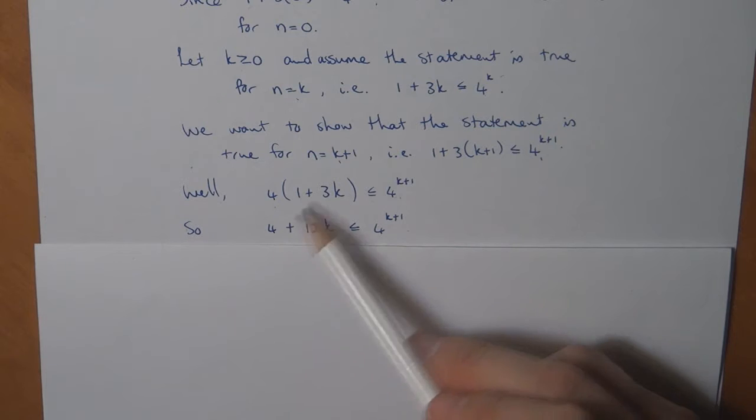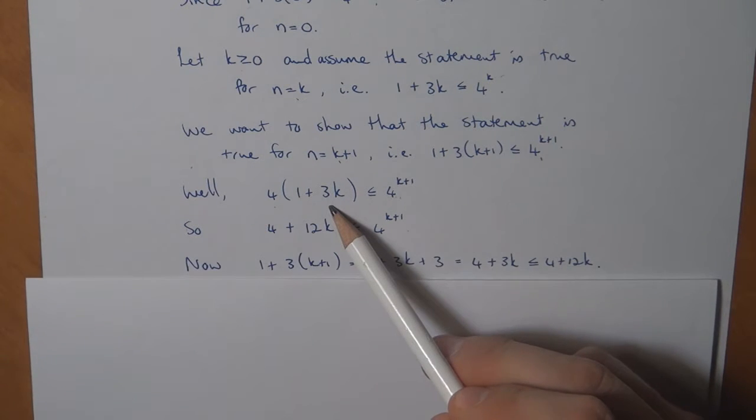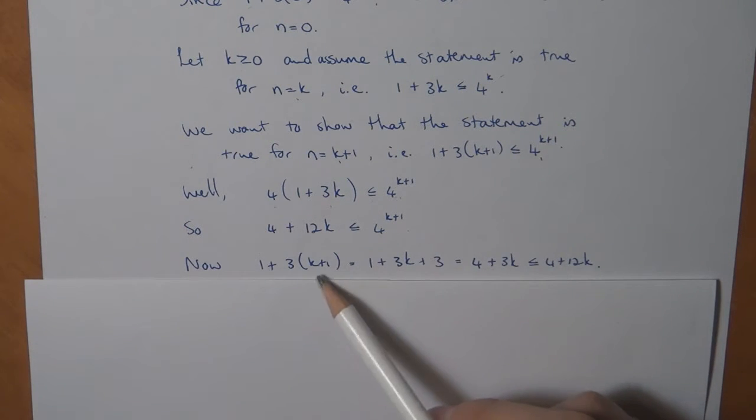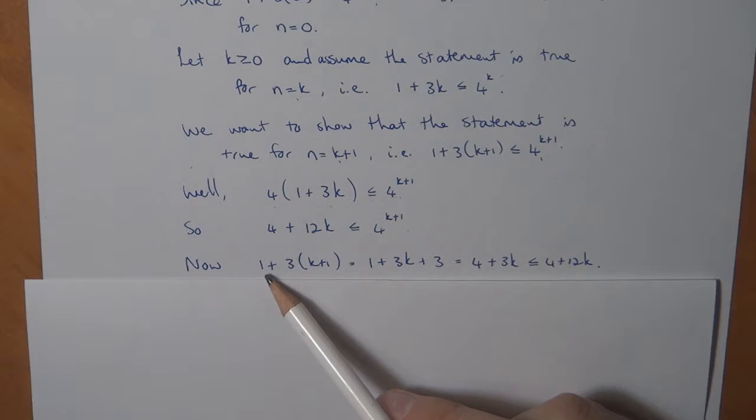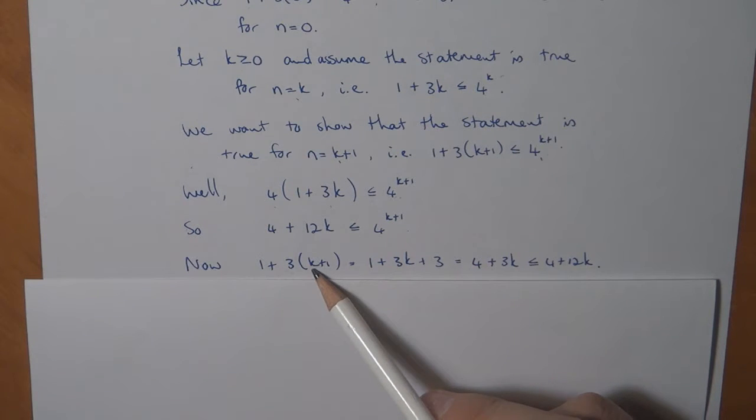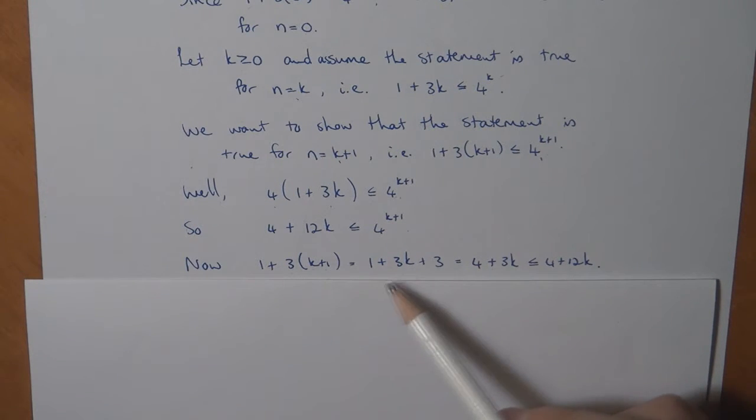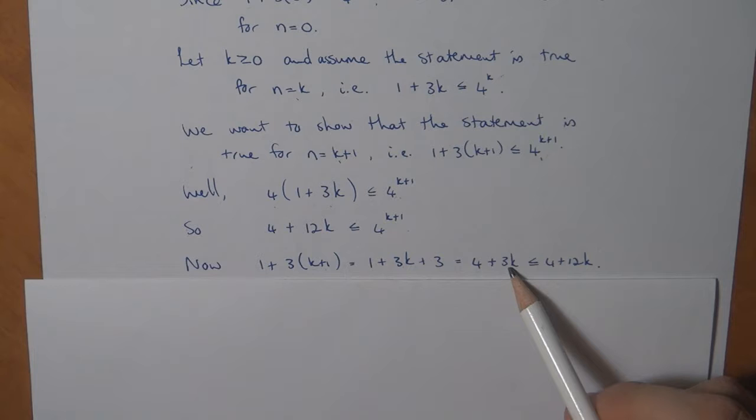And if I then multiply the 4 in, I see that what we have is 1 plus 3 times k plus 1, which is equal to 1 plus 3k plus 3, which is equal to 4 plus 3k.